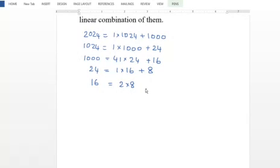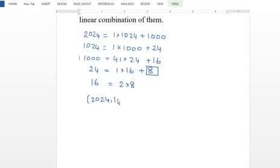The remainder is 0, so the GCD is 8. The GCD computation is complete. GCD(2024, 1024) is equal to 8.